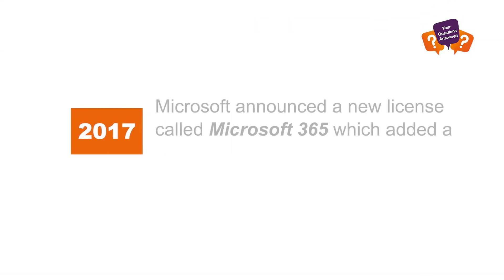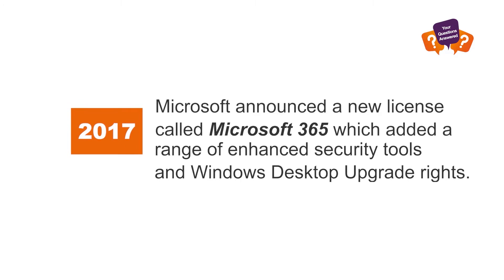In 2017, Microsoft announced a new license and they called it Microsoft 365. That added additional things to your Office 365 suites — it gave you desktop upgrade rights to Windows 10, for example, and it gave you access to a whole bunch of security features. That was pretty neat because it offered a real low price point to get modern and get secure, which we all know is important in today's climate.